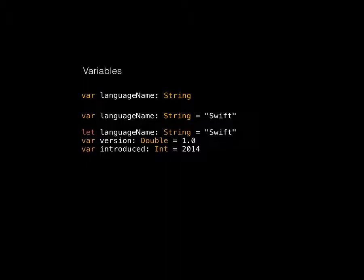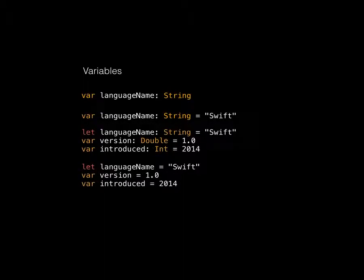One neat thing about Swift is that data typing is actually implied. Those three lines of code — language name, version, and introduced — are exactly the same as explicitly typed ones, but the data types are implied. Swift will work out the data types based on what's actually going in, and that variable is then strictly typed as a string, a double, and an int. You'd still get a compile-time error putting a string into version, but you don't need to declare data types manually.